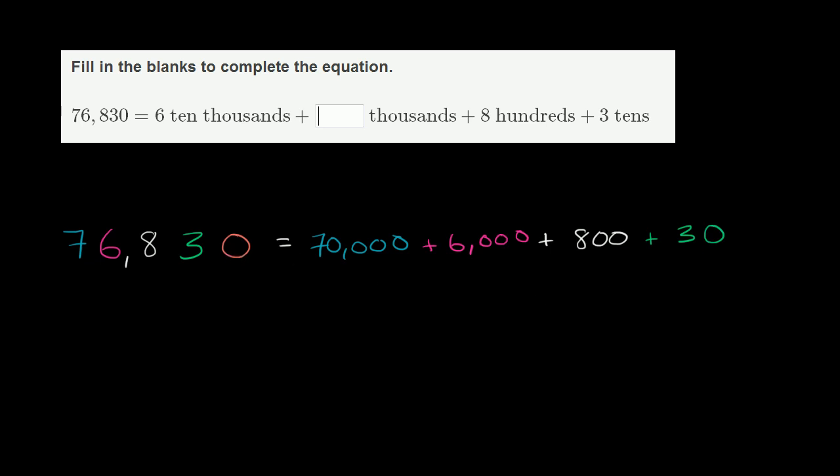And then there's a zero in the ones place. So we could just write that out as zero if we like. Now, what we have on the right here is almost what they have on the right over here. Notice the zero, they didn't write that. So we can ignore that. The zero really doesn't affect the value.